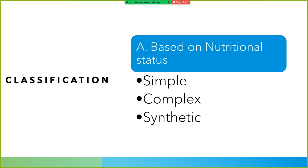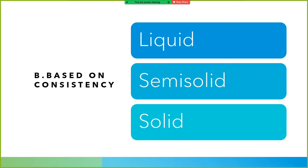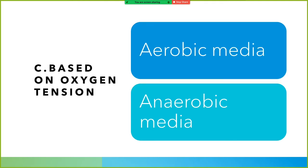Now let's classify culture media. Based on nutritional status: simple, complex, and synthetic. Based on consistency: liquid, semi-solid, and solid. Based on oxygen tension: aerobic media and anaerobic media.